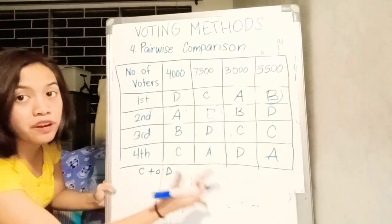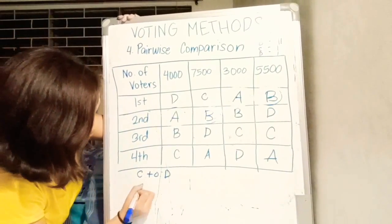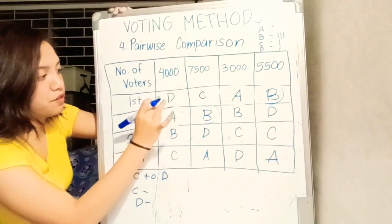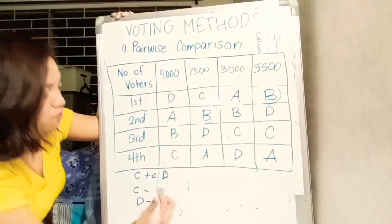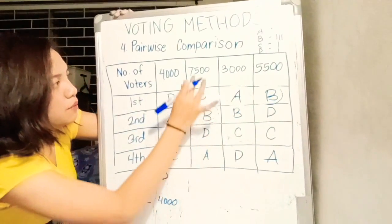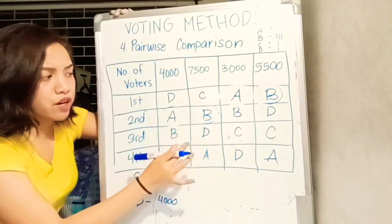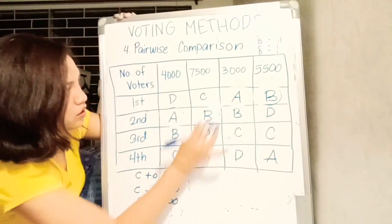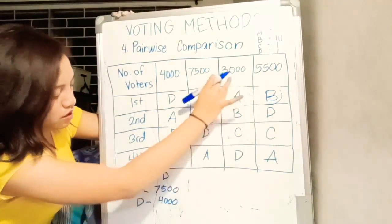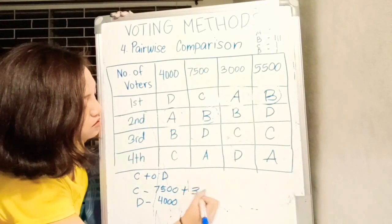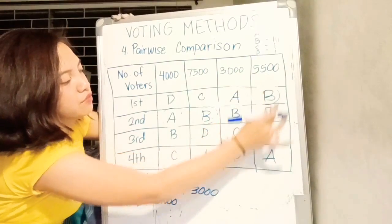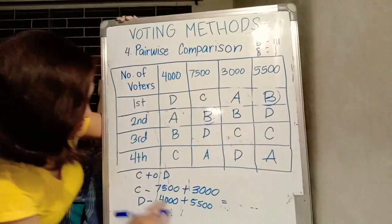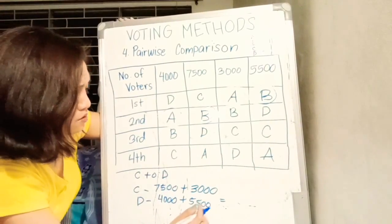Check nyo lang ulit sino yung preference ng voters. We have candidate C and candidate D. 4,000 voters prefer candidate D over candidate C, so dito sa kanya yung 4,000. For 7,500 voters, they prefer C over D. 3,000 voters prefer C over D, so 3,000 will be given to candidate C. And 5,500 voters prefer D over C, so plus 5,500 equals 7,500 plus 3,000, that's 10,500.